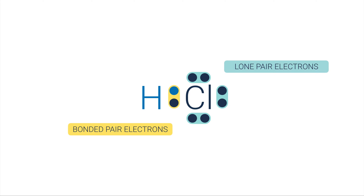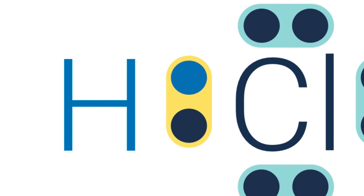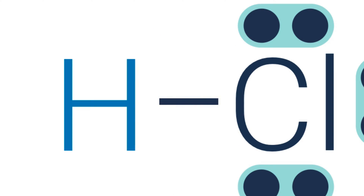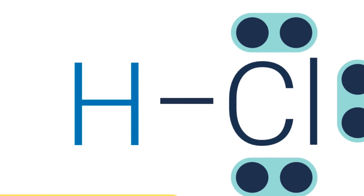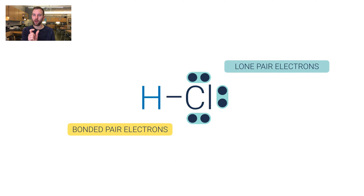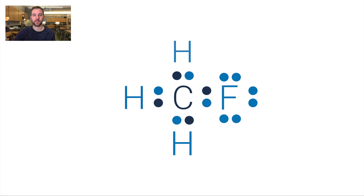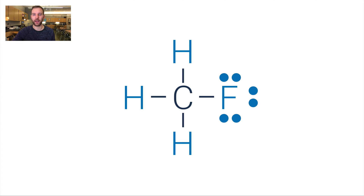When drawing Lewis structures, we often replace the bonded pair dots with just a line to represent that bond — this makes drawings faster. One important thing to know is that one line represents two electron dots, a bonded pair of electrons. For example, in CH3F, if I replace all the bonded pairs with lines, I really only end up with six dots. Make sure you don't get rid of those lone pair electrons — they affect the shape of the molecule and that's why they're important.